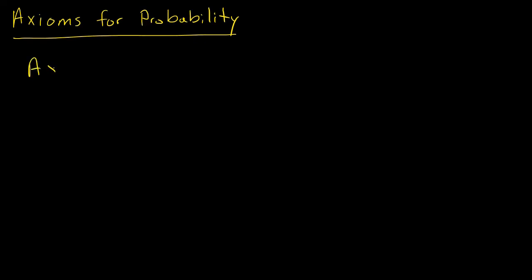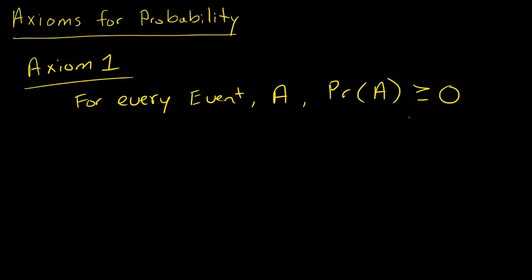Starting with axiom one. Axiom one states that probability of an event must be positive. For every event, say I call the event A, the probability of that event has to be greater than or equal to zero. So it can equal zero but it may not be negative. Probability has to be positive or zero.